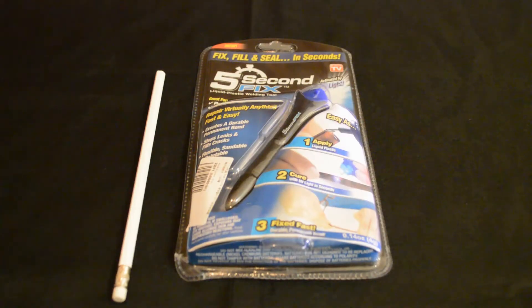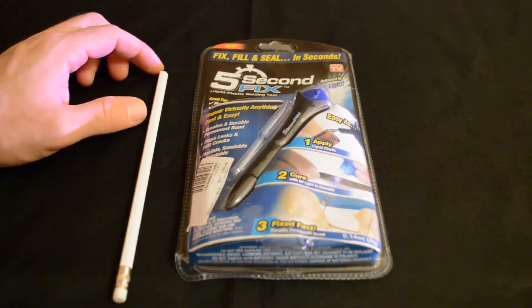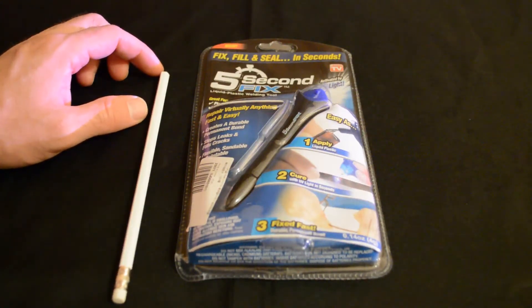Hey, what's going on everyone? Welcome to the Nine Miles Review of a product that I got from Joy Buy. It is the As Seen on TV Five Second Fix liquid plastic welding tool for plastic, metal, fabric, wood, glass, and more.